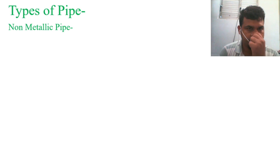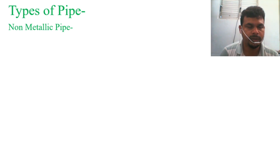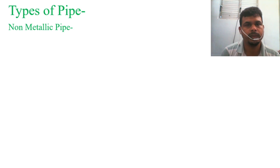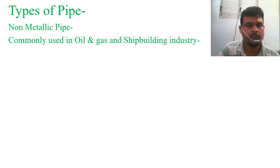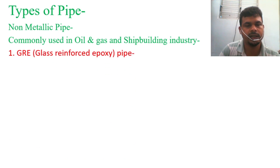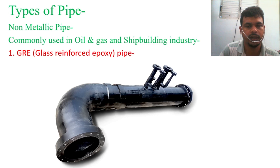Now we come to the non-metallic pipe. I will show you some photos of what non-metallic pipes we use. For now I will keep this section brief — if many people request it, I will prepare a separate lecture only for non-metallic pipe. Commonly used in oil, gas, and shipbuilding industries is GRE — Glass Reinforced Epoxy pipe. You can see from the photos how a GRE pipe looks; the color shown is black, but it can be different colors.